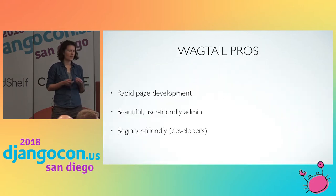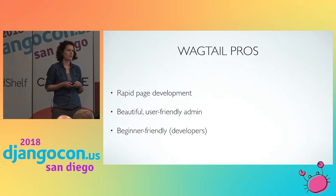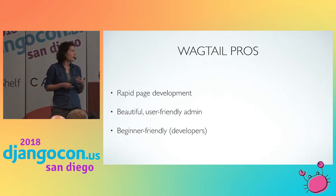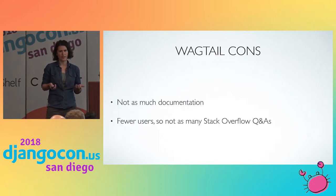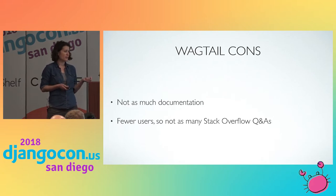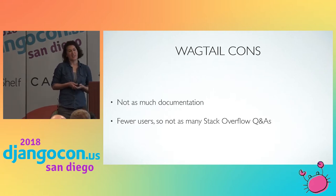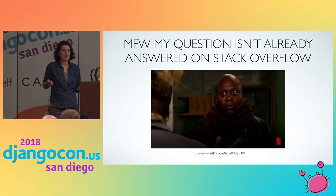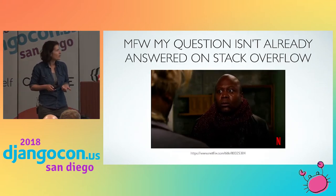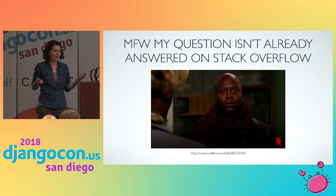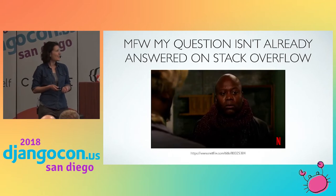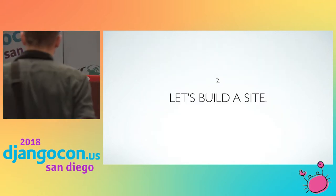Some pros about Wagtail: there is rapid page development as a programmer, there is a beautiful user-friendly admin, and it is beginner friendly especially for developers. Some cons: there is not as much documentation. The user base of Wagtail as a subset of Django is not very high, so there are fewer users and not as many of your questions will already be on Stack Overflow. There is always the source code though, and it is pretty simple to use.